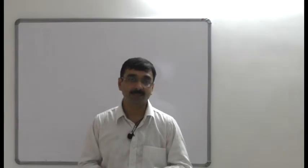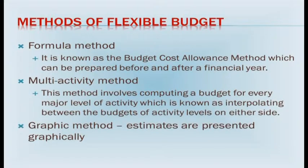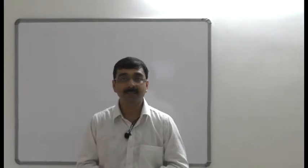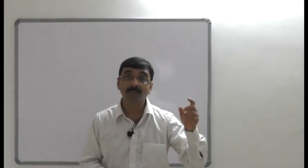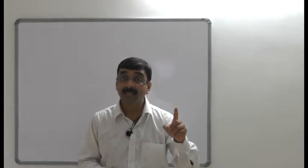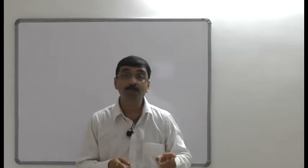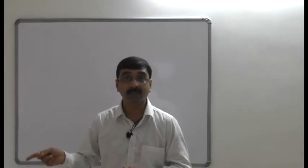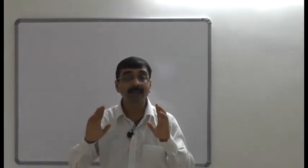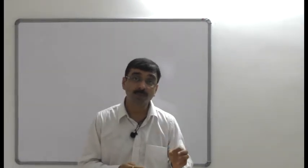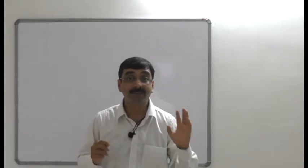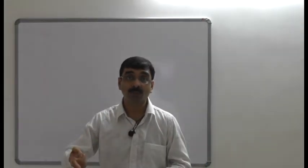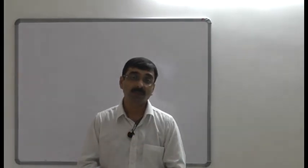The first method of flexible budgets is the formula method, also known as the ratio method or budget allowance method. Before the period begins, a budget for a normal level of activity is identified and segregated into fixed and variable costs, computing the variable cost per unit of activity. At the end of the period, ascertain the actual activity, compute the variable cost allowed for the different level, and add the fixed cost to give the budget cost allowance.